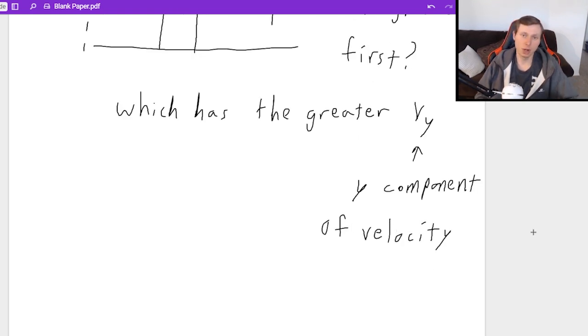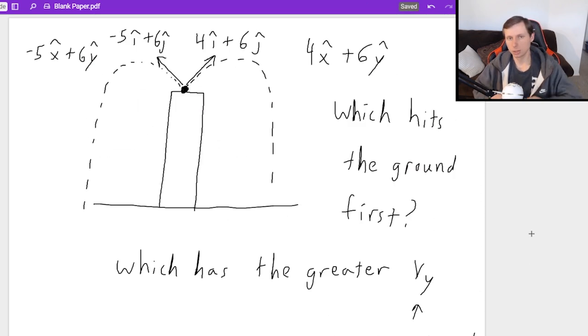If you can tell me that, then you know which one's going to be in the air longer. So I think it's pretty straightforward in the theory. In other words, if you throw something more upwards, it's going to hang in the air longer. And the only thing I have to say more than this is I only care about the y component. I do not care about the x component at all.